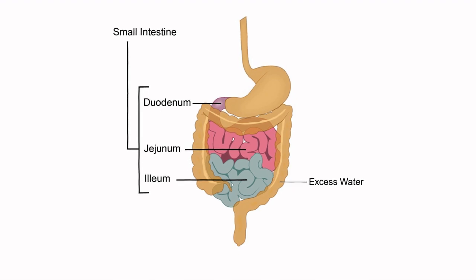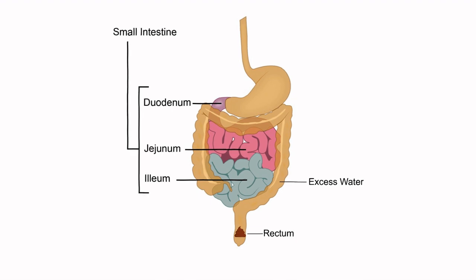Left behind is solid waste, which passes from the colon to the rectum. The solid waste, or indigestible parts of food — also called stool — is stored in the rectum until a set of abdominal muscles contract and increase pressure in the rectum to push the stool out.